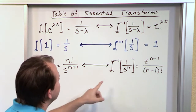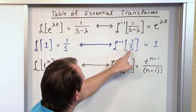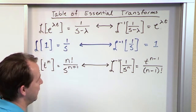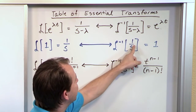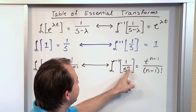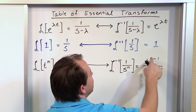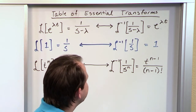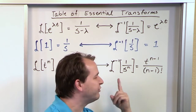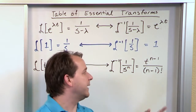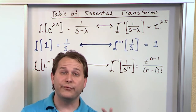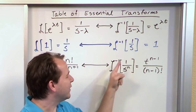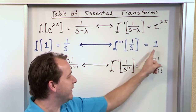Notice that we already said the inverse transform of 1/s is 1, which is a special case. You can verify the recast formula: put n equal to 1, giving 1/s to the first power. Then t to the (1−1) is t to the 0, which is 1, and (1−1) factorial is 0 factorial, which by definition equals 1. So you get 1 over 1, which is 1 — confirming consistency with what we listed separately.